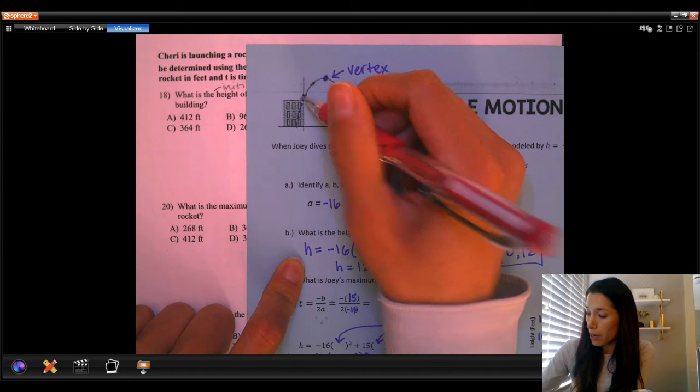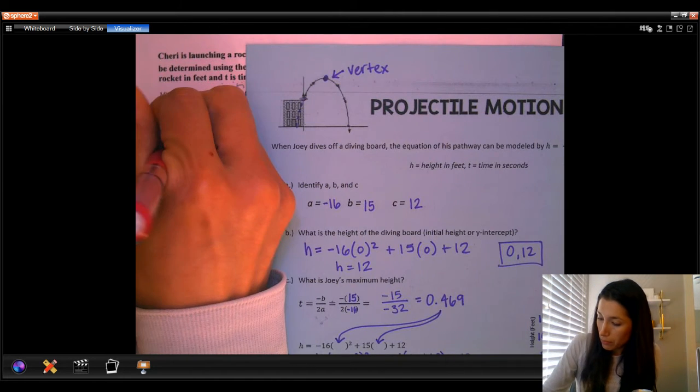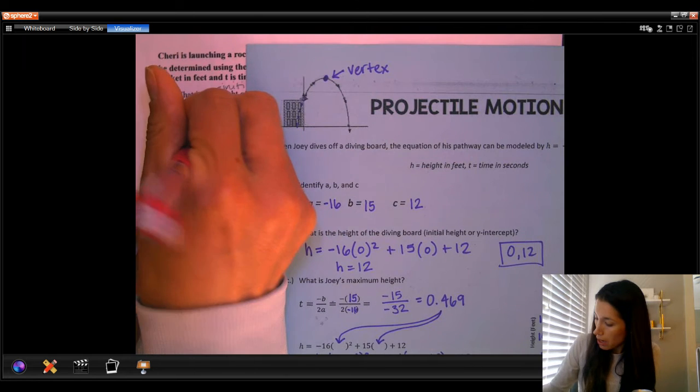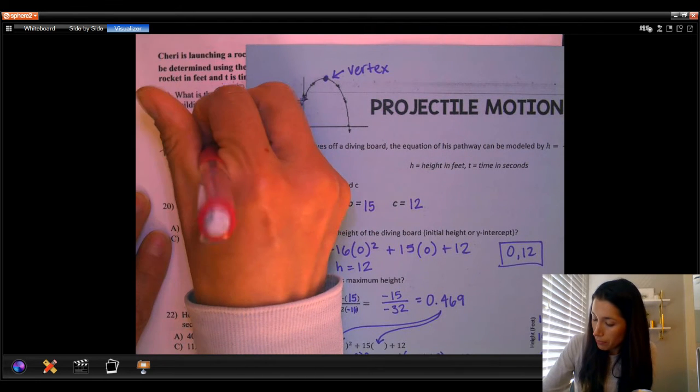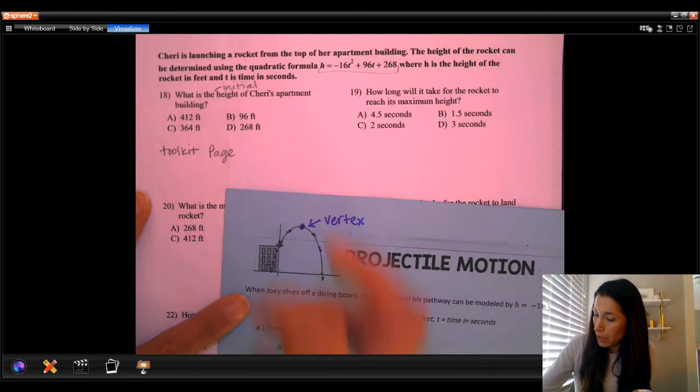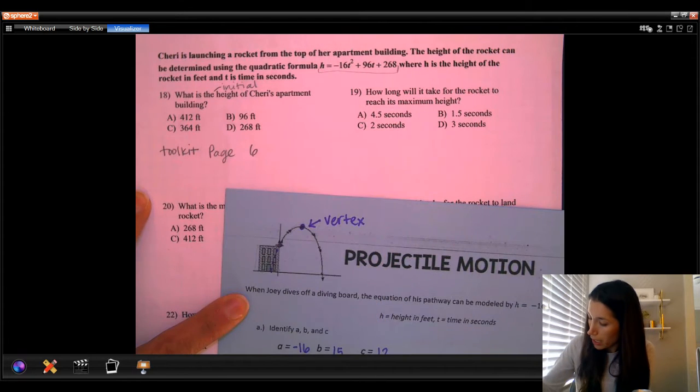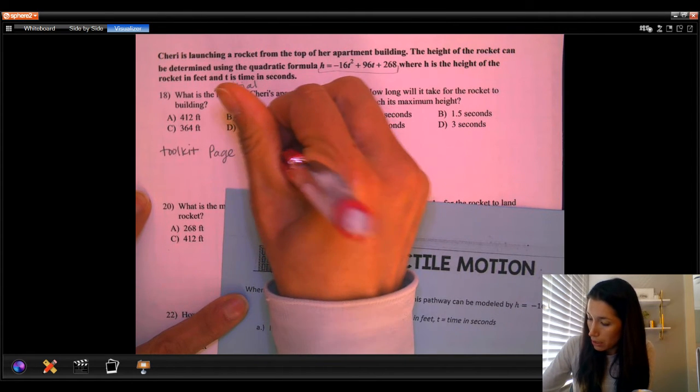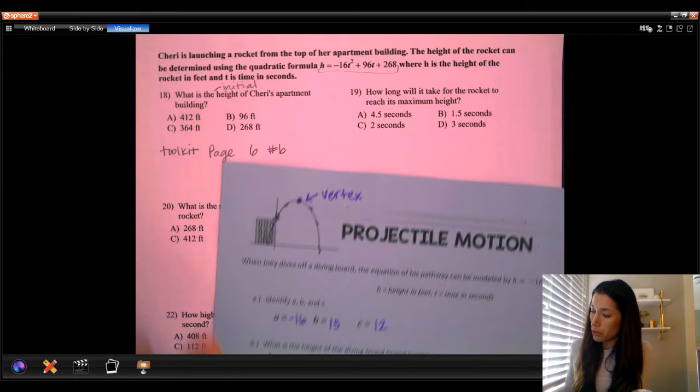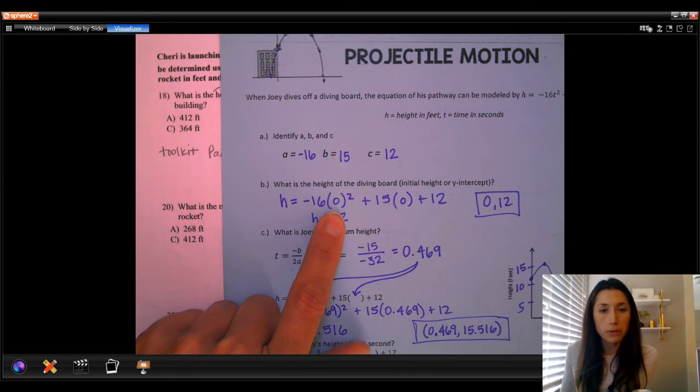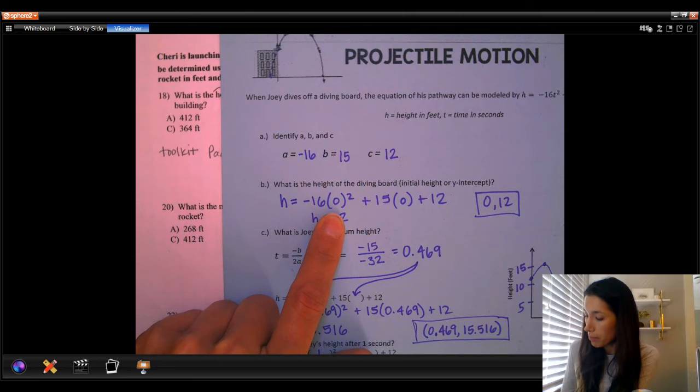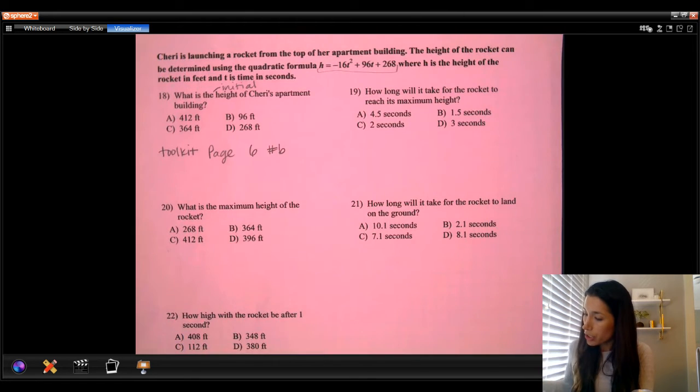Okay, so I would look at toolkit page six, and you're looking at question number B. So what is the initial height? You can see an example of how we're doing that here. We're plugging in zero for time. That's our y-intercept.